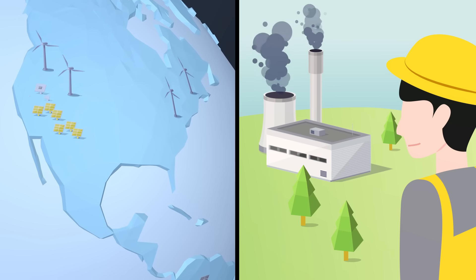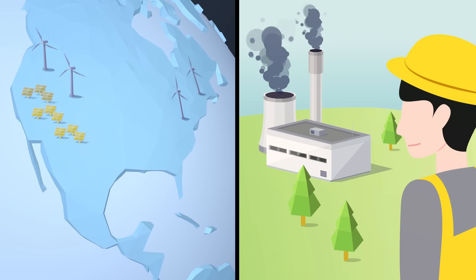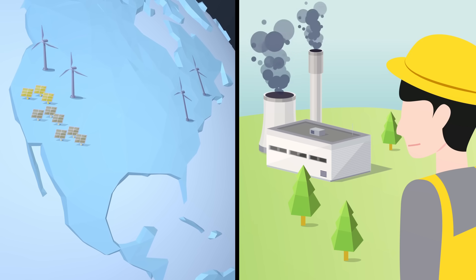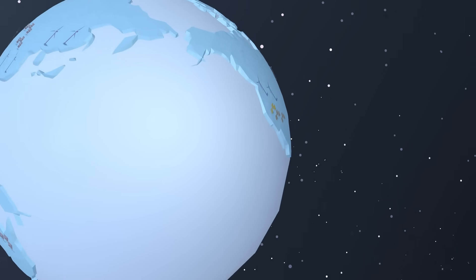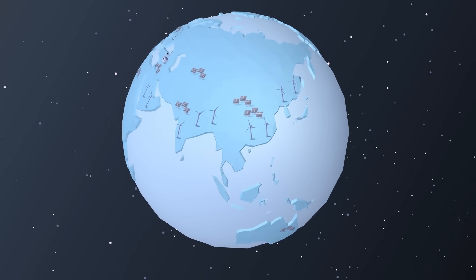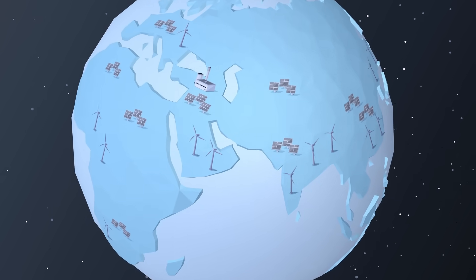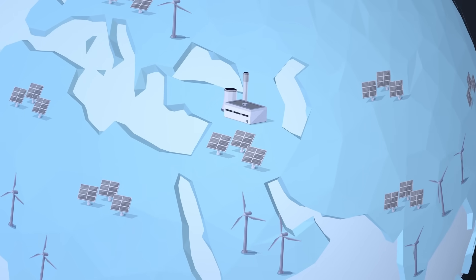Surprisingly, to slash carbon emissions, it's not enough to build clean energy anywhere to meet electricity demand. To close the fossil fuel plants, we had to keep building clean energy near the power plants that were doing the emitting.